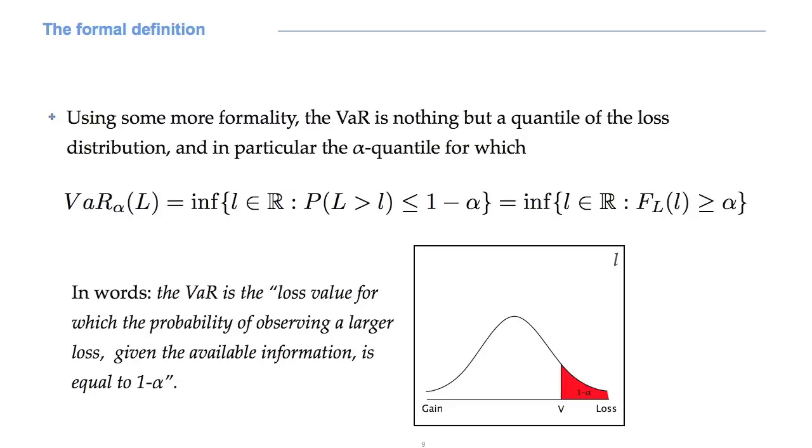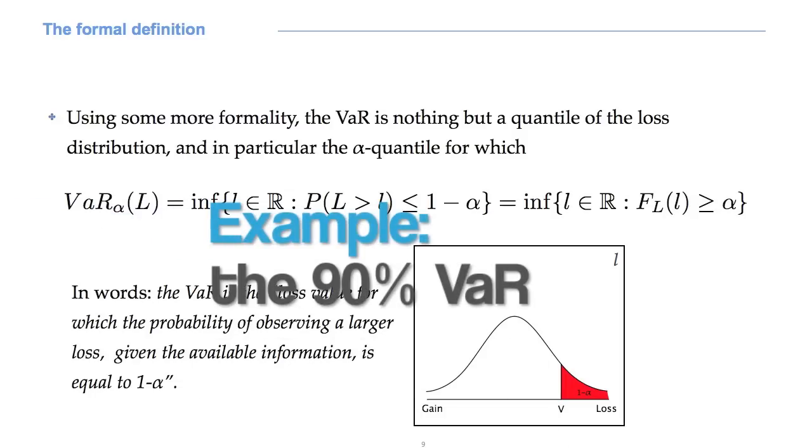In other terms, the VAR alpha is the threshold loss such that the probability of observing smaller losses, given the loss distribution, is alpha.